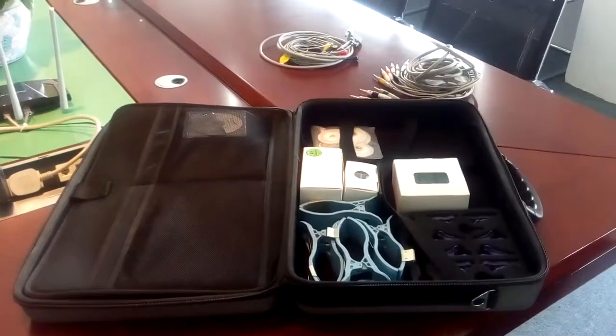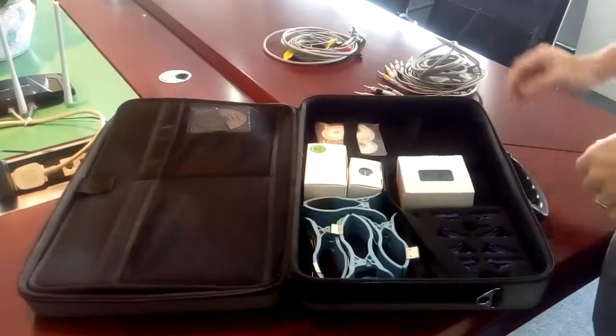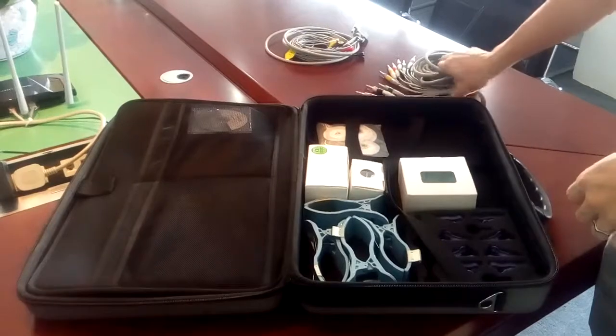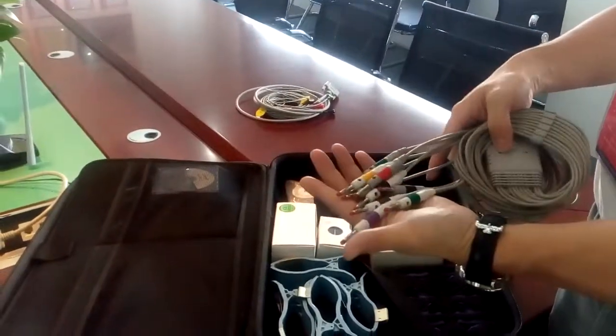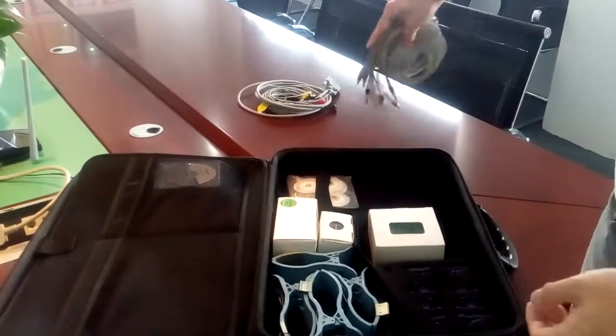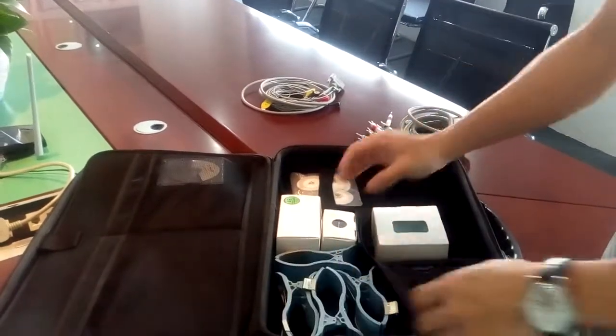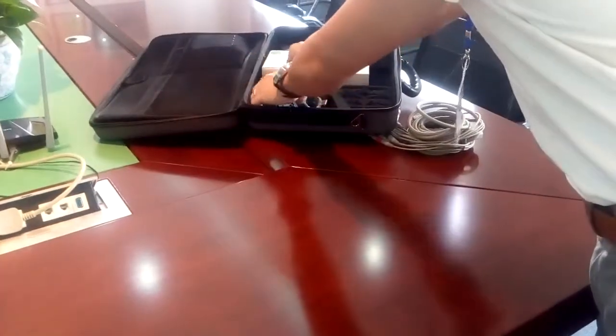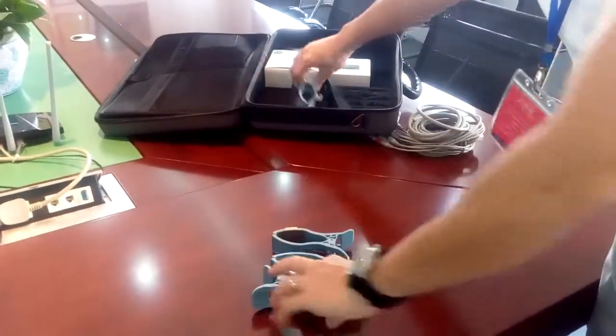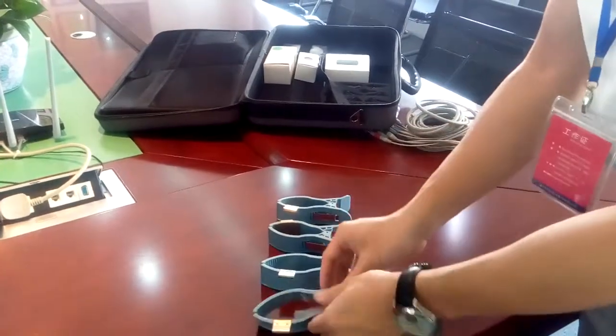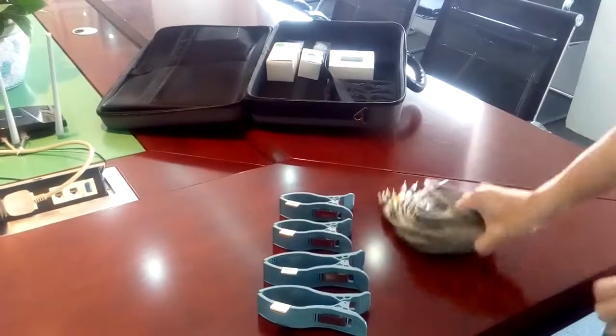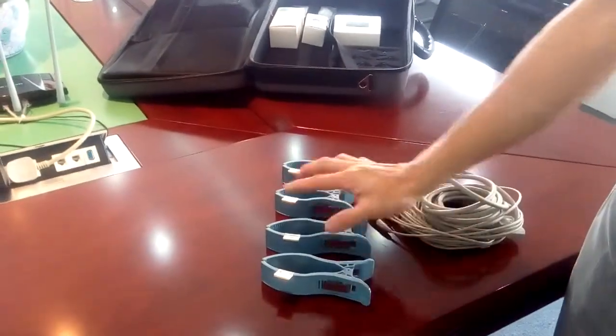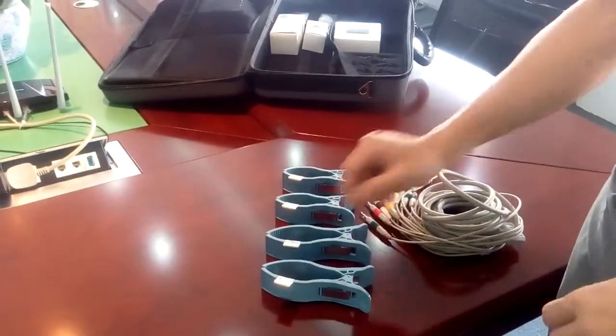When you get the ECG from CareWell, in the standard accessory box you will have this patient cable with the banana head and four different clamps. These four clamps are for adults.